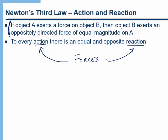If I push on the wall to the right, then the wall pushes back on me to the left. It's always: object A exerts a force on object B, and object B exerts an oppositely directed force of equal magnitude on A. Notice that one force is acting on B and one force is acting on A in those pairs of forces.